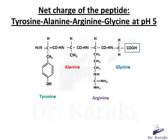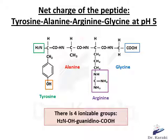Now let's solve this exercise that aims to calculate the net charge of the peptide tyrosine-alanine-arginine-glycine at pH 5. As already mentioned, we have to determine the ionizable groups. On the right side of the peptide chain we have the carboxyl terminal end, and on the left side we have the amino terminal end. Looking at the side chains: tyrosine has a hydroxyl function, alanine doesn't contain an ionizable group, arginine has a guanidino group, and glycine doesn't contain an ionizable group except for its terminal carboxyl function. So in total, in this peptide chain we have four ionizable groups.